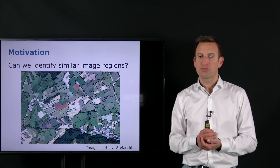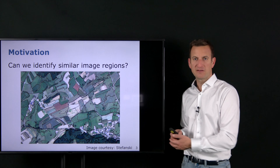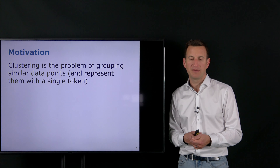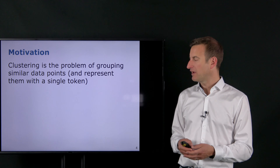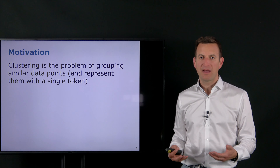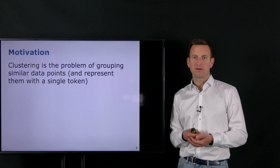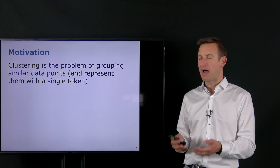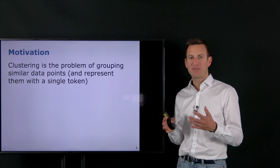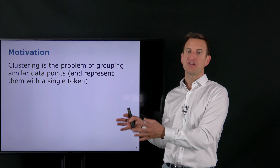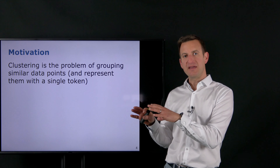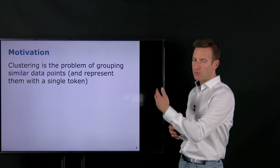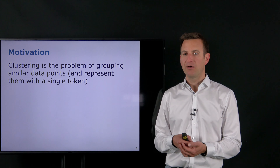Quite often we are faced with a problem that we have data points — in this case these are pixels in an image — which we want to group together. That's something typically called a clustering problem, and often this is an unsupervised process. I'm just saying: here is my raw data, see what you think is similar. I need to provide a measure of similarity to the algorithm and let it group similar items together — without training data.